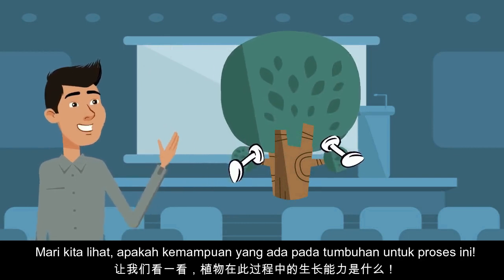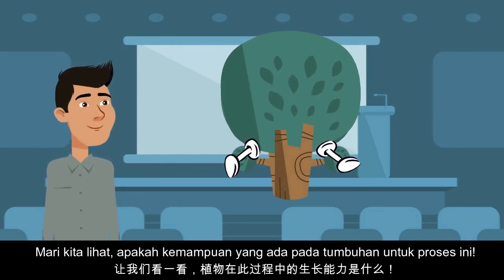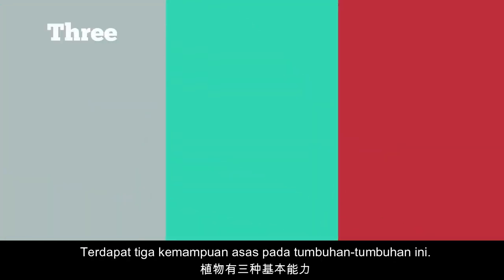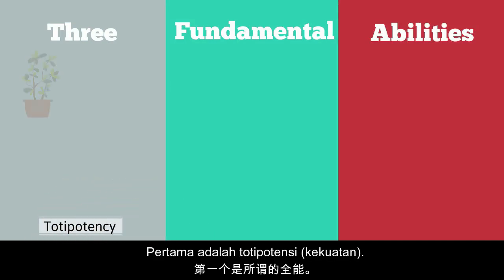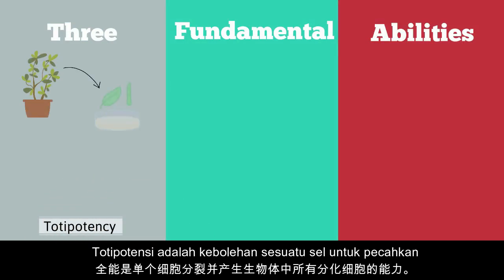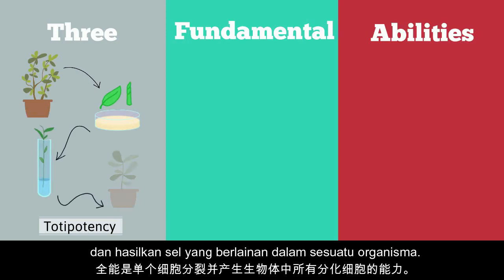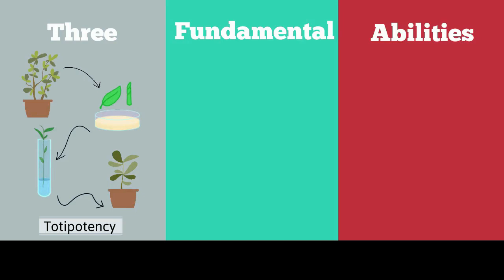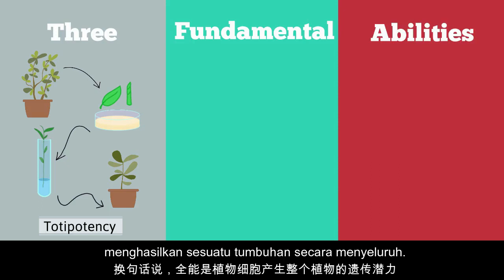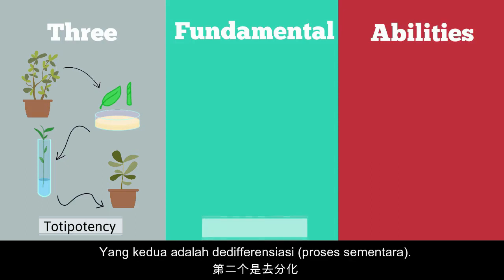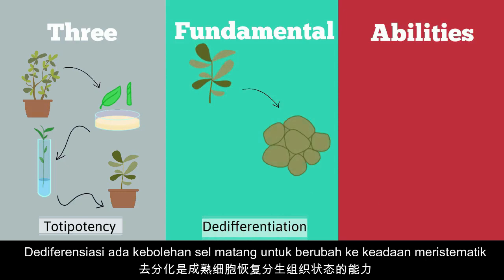Let's look at the fundamental abilities of the plant to grow in this process. There are three fundamental abilities of plants. The first is totipotency — the ability of a single cell to divide and produce all of the differentiated cells in an organism. In other words, totipotency is the genetic potential of a plant cell to produce the entire plant.